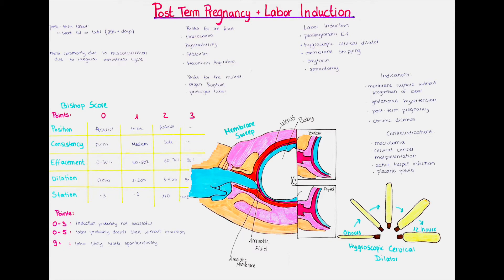The normal length of a pregnancy is between 37 to 42 weeks. If a baby is born before the 37th week, it is called preterm. If a baby is born after the 42nd week, it is called post-term. So post-term pregnancy is one that is longer than 42 weeks or 294 days from the first day of the last menstruation. This is actually quite common — 10% of births occur post-term.